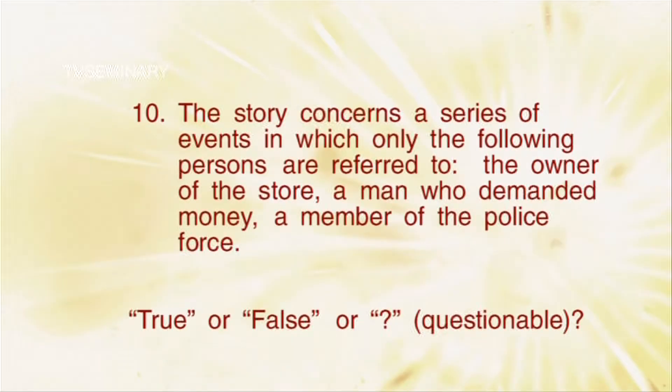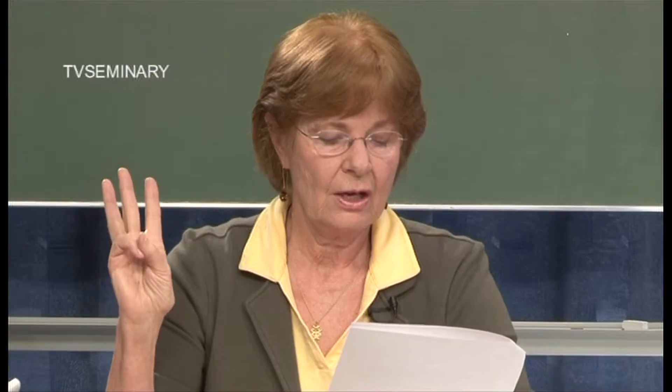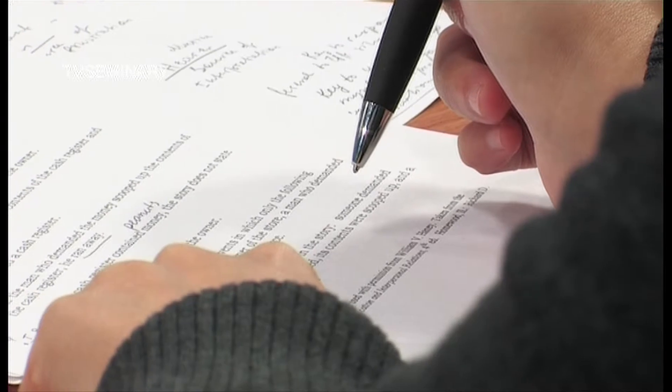Number ten: the story contains a series of events in which only the following persons are referred to — the owner of the store, a man who demanded money, and a member of the police force. It's a question mark because we don't know whether the businessman was the owner of the shop or not.